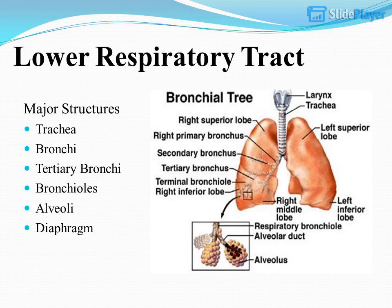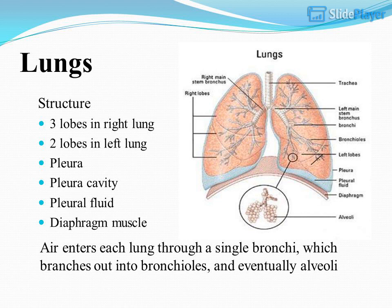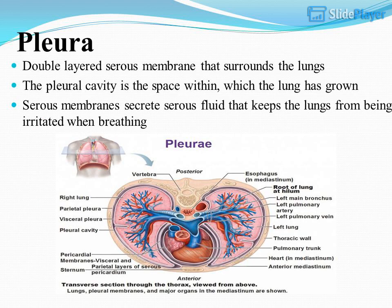Lower respiratory tract. Major structures include the trachea, bronchi, tertiary bronchi, bronchioles, alveoli, diaphragm, and lungs. Lung structure: 3 lobes in the right lung, 2 lobes in the left lung. Air enters each lung through a single bronchus, which branches out into bronchioles and eventually alveoli. The pleura is a double-layered serous membrane that surrounds the lungs.